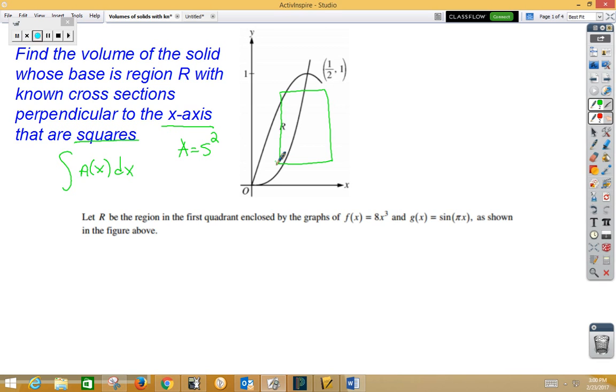The side length is actually the top curve minus the bottom curve. So if the top minus bottom is s, then what we're going to do to get side squared is to square the top function minus the bottom function.